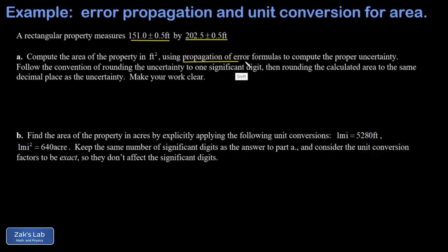And we're planning to use propagation of error in part A to compute the area of this property in square feet and then attach the correct uncertainty to it. Then in part B, we do a unit conversion between square feet and acres, and we consider our conversion factors to be exact so they don't influence the precision of the answer that we got in part A.